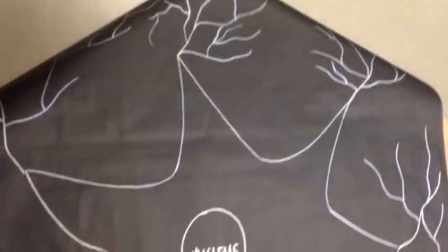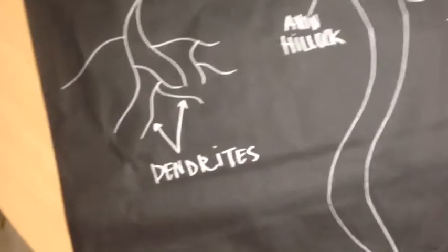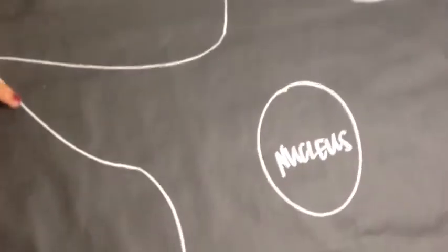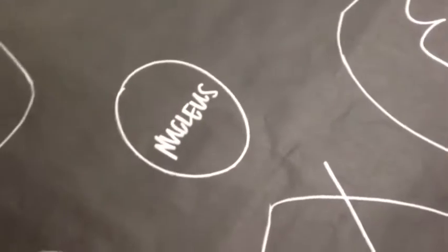This is a model of a neuron with its dendrites, nucleus, and axon terminal. Here we have the cell body, which holds the nucleus. These little nerve-like fiber things are called the dendrites. Right here is the axon hillock, and then at the end we have our axon terminal.